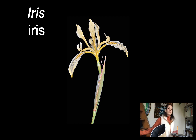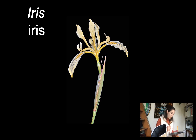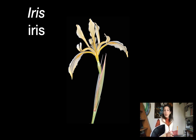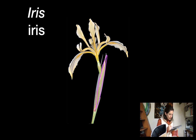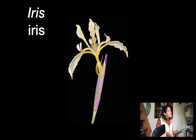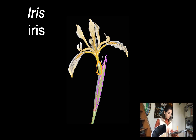Everything before this slide covered family-wide features for Iridaceae. Now we're talking about genus Iris proper — this is your only required genus in the family, and conveniently the common name is just iris. In this picture, we've pulled back a bract to reveal the inferior ovary, which is right here. Always in this family we'll have that inferior ovary, and almost always a bract covers it — so it's not an obvious inferior ovary; you usually have to pull back a bract.